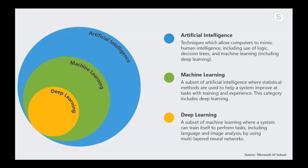What is artificial intelligence? Artificial intelligence is a technique which allows computers to mimic human intelligence, including use of logic, decision-making, and machine learning, including deep learning. What is machine learning? Machine learning is a part of artificial intelligence.